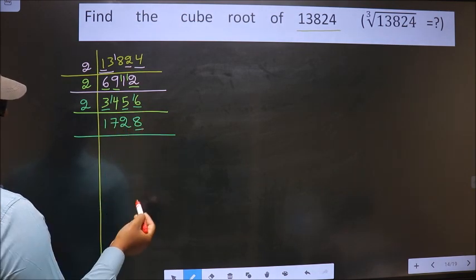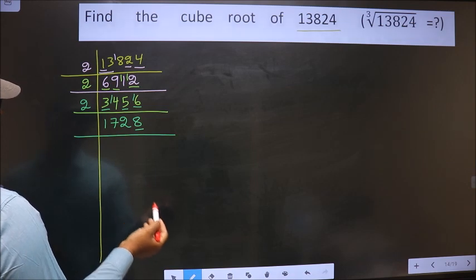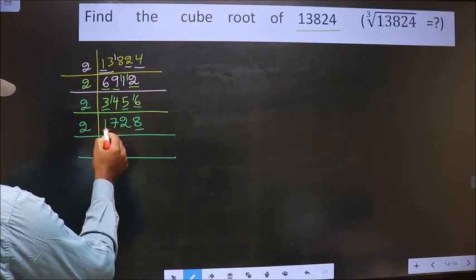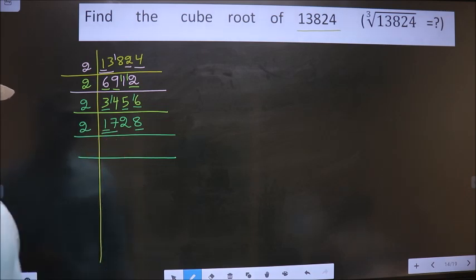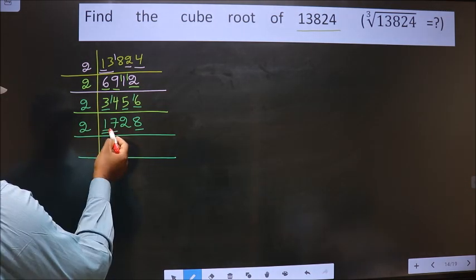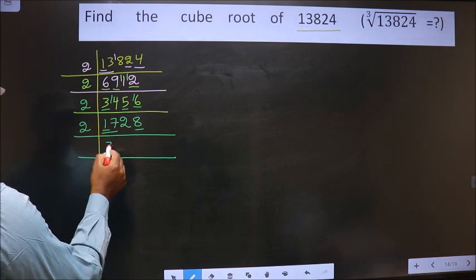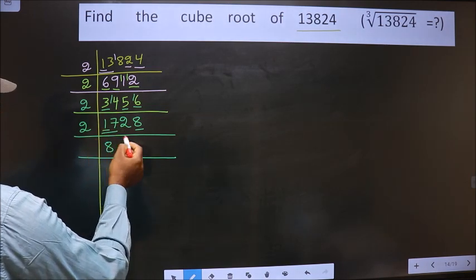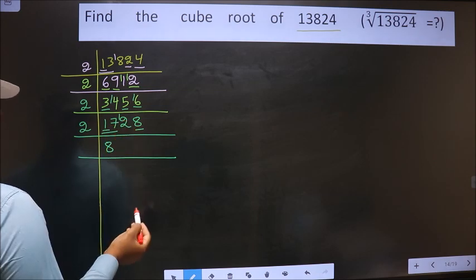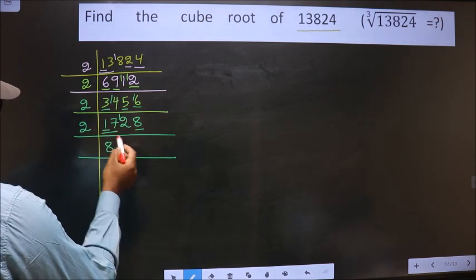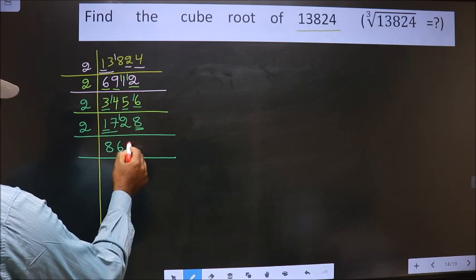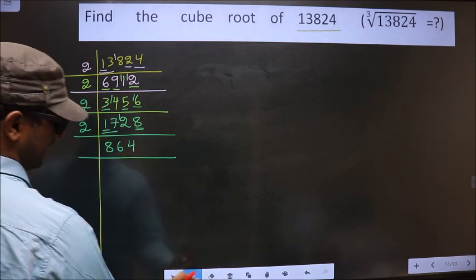For this number, the last digit is 8, which is even, so we take 2. First digit is 1, which is smaller than 2, so we take 2 digits: 17. Close to 17 in the 2 table is 2×8=16. 17 minus 16 is 1, carried forward making 12 — 2 sixes are 12. Next digit is 8 — 2 fours are 8. So 1728 ÷ 2 = 864.